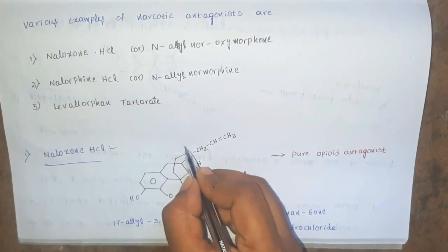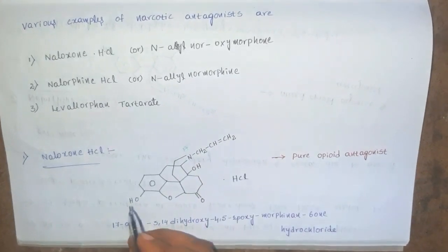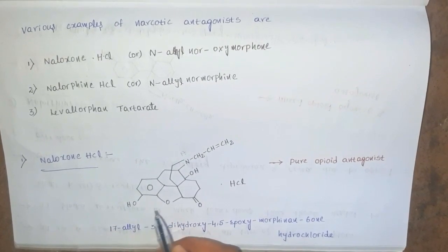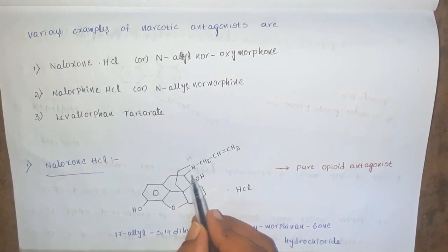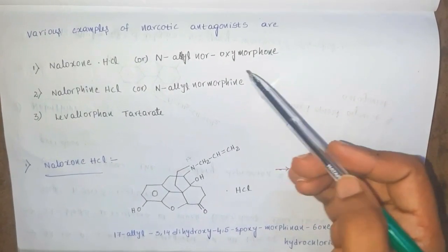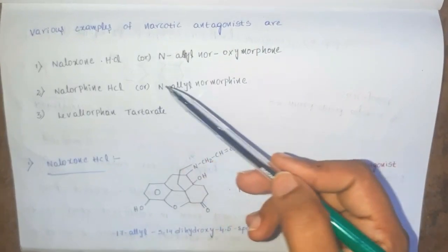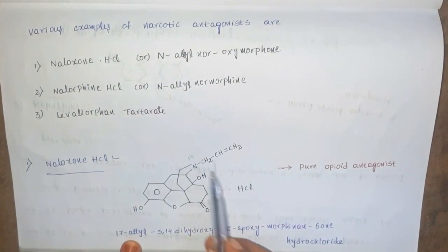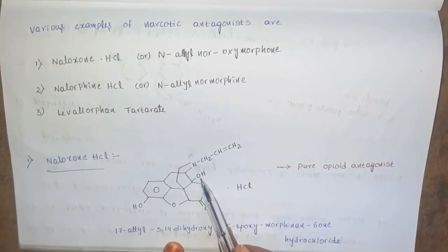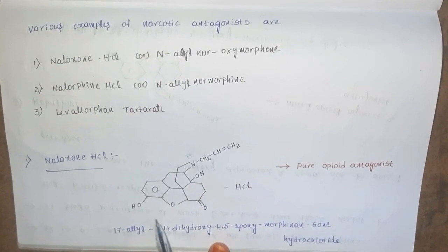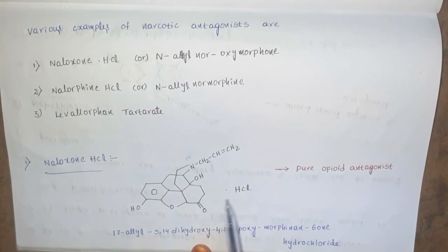At the 17th position, nitrogen is directly attached to an allyl group. The 3rd position contains an OH group, the 6th position contains a double bond oxygen, and the 14th position contains an OH group. So it is called as oxymorphone. N-allyl nor-oxymorphone is also called as naloxone. Coming to the nomenclature: 17-allyl, 3,14-dihydroxy, 4,5-epoxy morphinan-6-one hydrochloride.